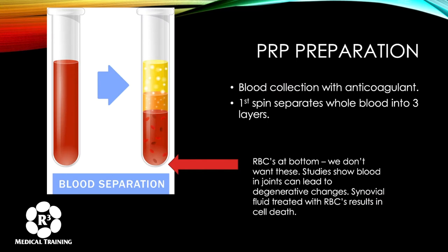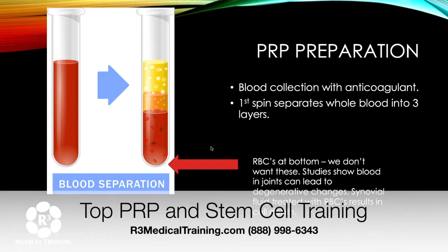When you prepare PRP, blood comes from the patient and is collected just like at a normal lab, then put into the tube or kit. For the first spin in a centrifuge — for M-Site it's only one minute; for some systems it's five or ten minutes — it has to be very fast, usually between 3,000 to 4,000 RPMs. The blood separates: red blood cells go to the bottom since they're the heaviest. Studies have shown various deleterious effects of RBCs, such as blood in the joints leading to degenerative changes.